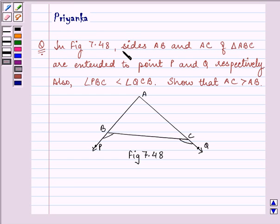In figure 7.48, sides AB and AC of triangle ABC are extended to point P and Q respectively. Also, angle PBC is less than angle QCB. Show that AC is greater than AB.